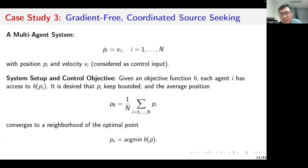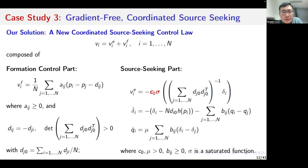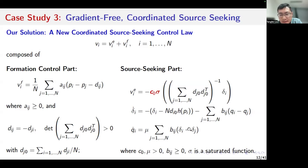In practice, we may use objective function h to represent the field function generated by some signal source. This is the reason why we call this problem the source seeking problem. I proposed a new coordinated source seeking control law to solve the problem. The control law is composed of two parts: one part is the formation control part, which is based on the standard formation control algorithm, and the other part is the source seeking part, which is based on a distributed averaging algorithm to estimate the gradient information of the objective function.